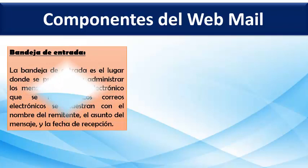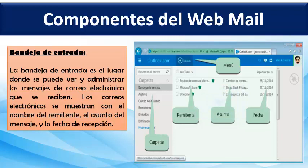Vamos a ver los componentes del webmail. El primer componente que encontramos es la bandeja de entrada, que es el lugar donde se puede ver y administrar los mensajes de correo electrónico que se reciben. Los correos electrónicos se muestran con el nombre del remitente, el asunto del mensaje y la fecha de recepción. Acá tenemos la interfaz de Outlook.com, que anteriormente era Hotmail, donde podemos ver el área de carpetas, el remitente, la barra de menús, el asunto y la fecha.